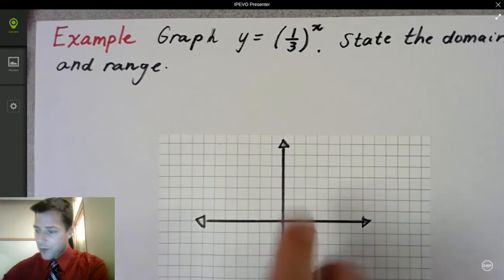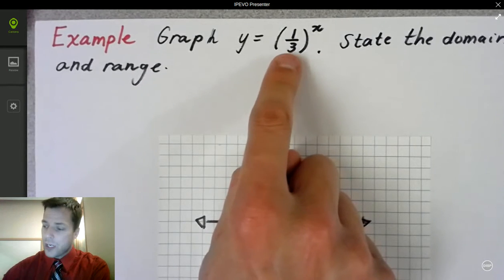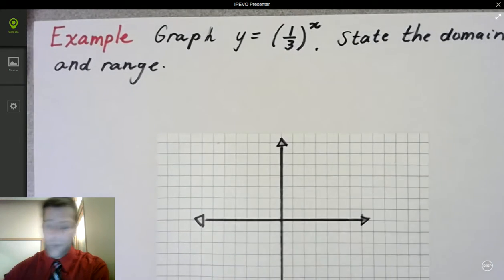So we're going to graph y equals 1 third to the x. There's what I mean. It's between 0 and 1. So even if I put 4 thirds here, that's still growth. This number b has to be between 0 and 1 for us to have decay.